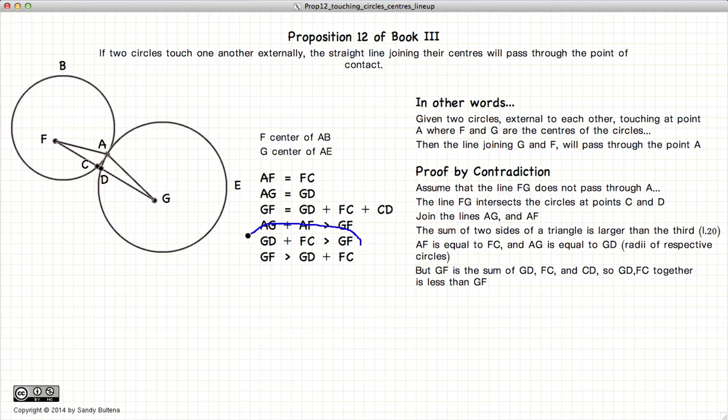So in other words, we have a contradiction right here. And because we have this contradiction, we have demonstrated that FG must pass through point A.